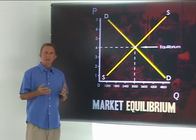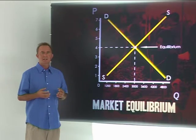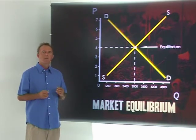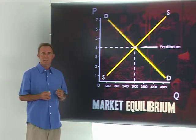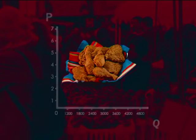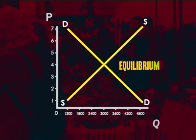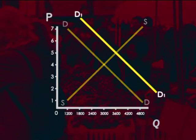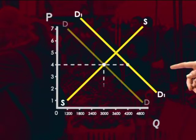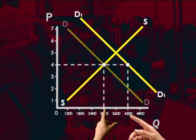Let's now consider what happens if there's an increase in the income of households. A rise in income boosts the demand for fried chicken — households can now afford to buy more fried chicken at each price. This is indicated by a rightward shift of the demand curve. According to our new demand curve, at the old equilibrium price of 4 Rand, the quantity demanded is now 4,200 pieces.